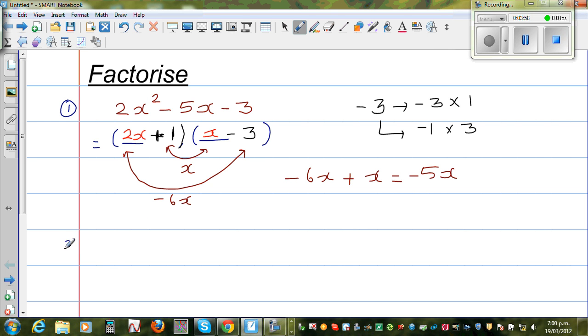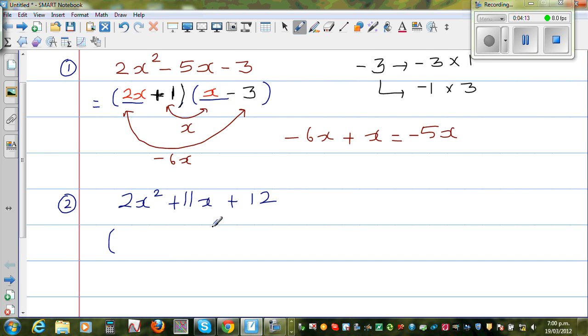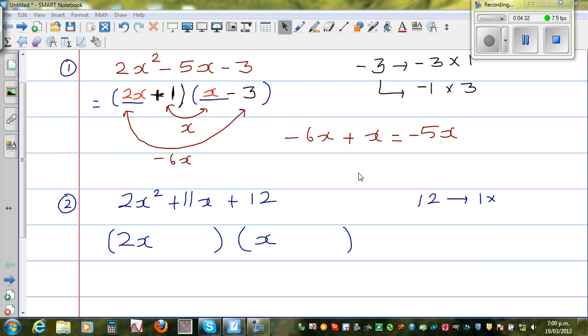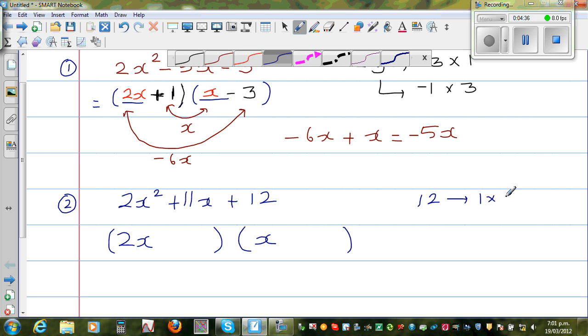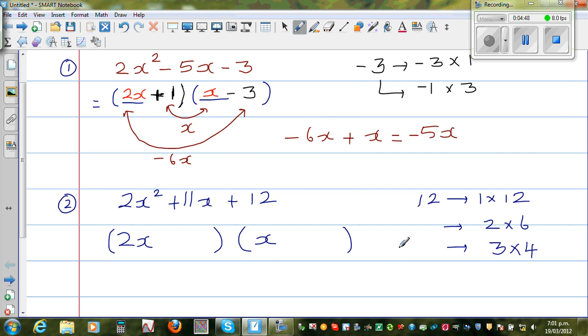Let us take the next question. The next question is 2x squared plus 11x plus 12. This is all plus so there is no problem. So it is similar to the previous question, I will start with two brackets. So obviously 2x and x will only give you 2x squared. Now 12 you can write in different ways: 1 times 12, 2 times 6, 3 times 4, 6 times 2 and so on. So which are the two numbers that adds to give you plus 11?